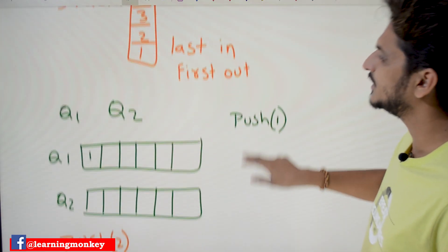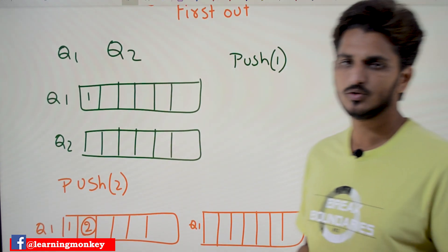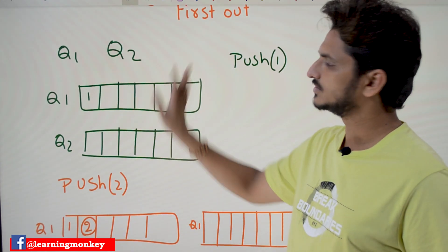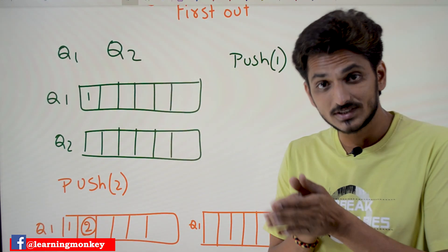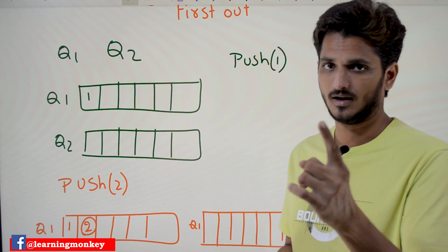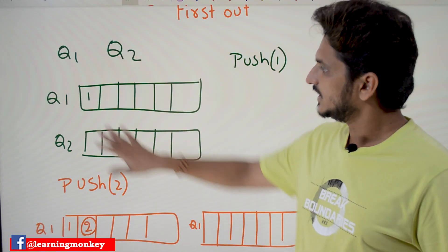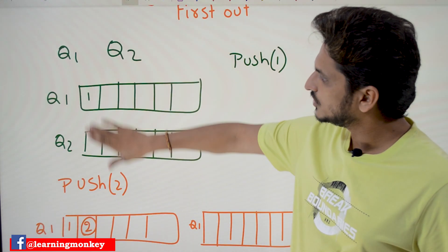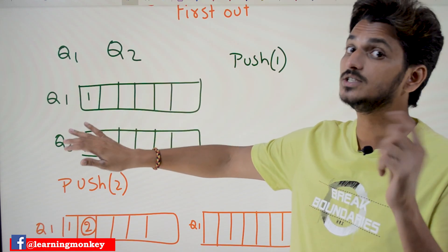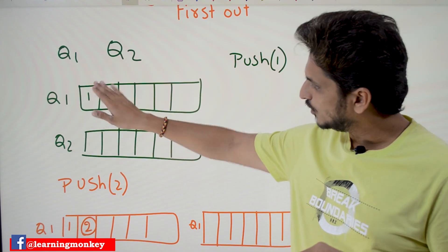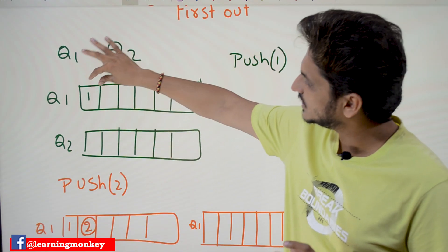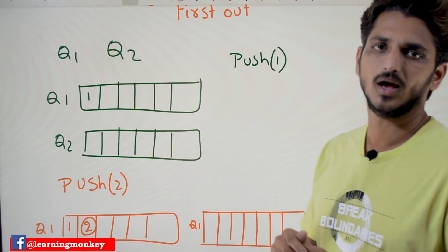Now coming to the logic: take two queues. First, if you want to insert an element, assume the element is one. Initially both queues are empty — queue works as first in first out. We are inserting one into queue one.